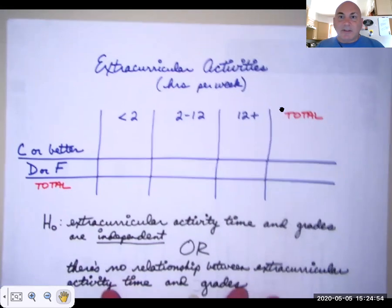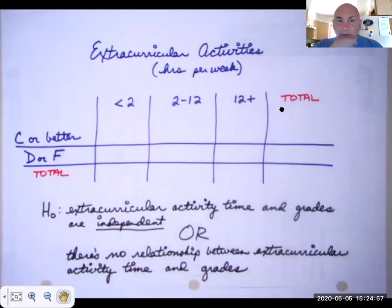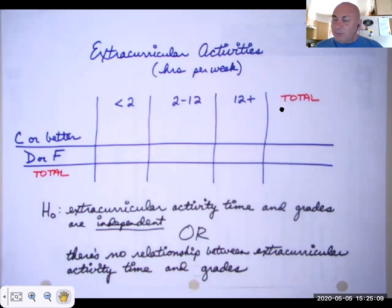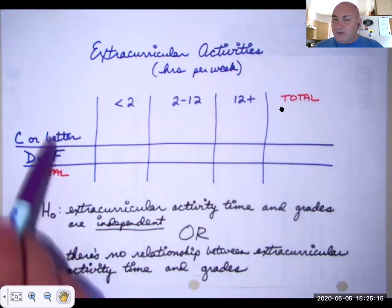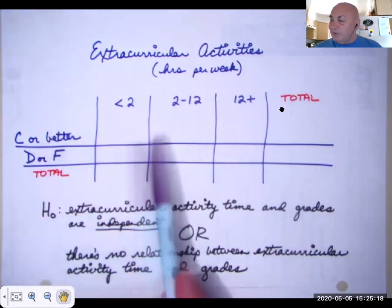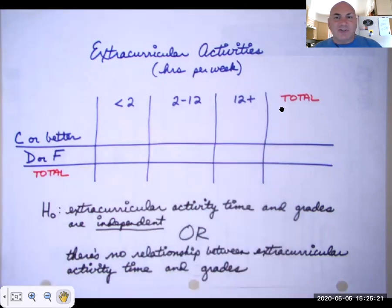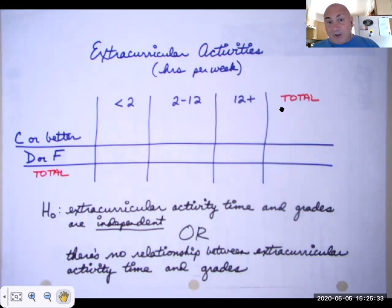Let's say we want to know if there is a relationship between getting passing grades — which is a C or better in this example — and how many hours a week you put into extracurricular activities. These are categorical or qualitative variables, and I want to know if there's a relationship. I'm not saying there's a cause and effect, and I'm not defining what the relationship is. If there is one, we'll have to figure out where that relationship is later with some follow-up analysis.